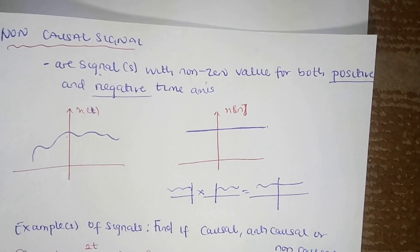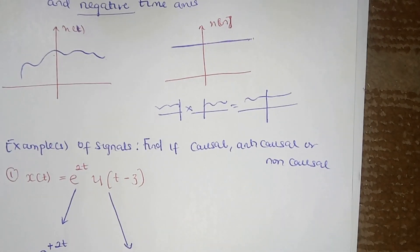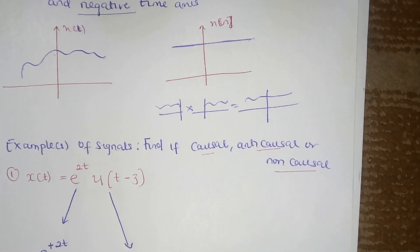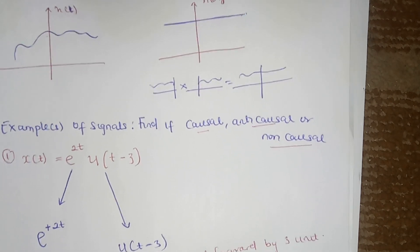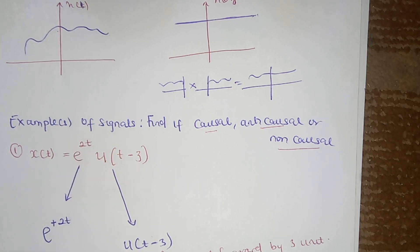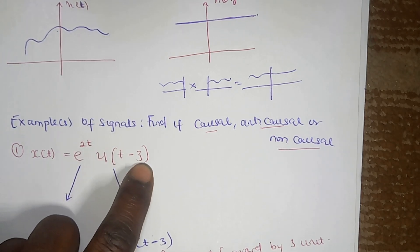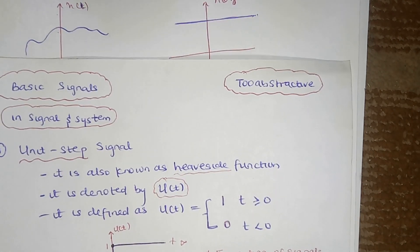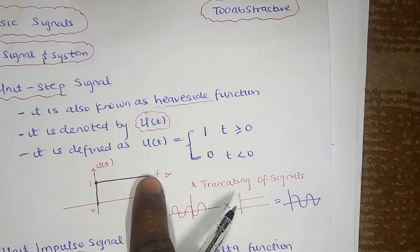Now let's look at examples of signals and determine if they are causal, anti-causal, or non-causal. The first signal is x(t), so since it is x of t it is a continuous time signal. It has e raised to the power of 2t, which is an exponential, multiplied by u(t minus 3). We recall that u(t) is a signal with a value of one for t greater than or equal to zero, as we explained.